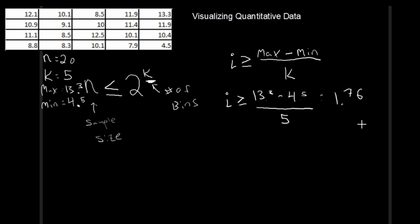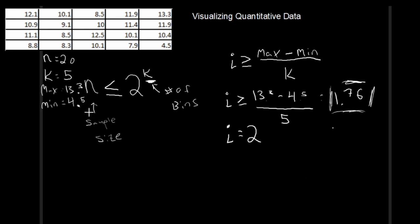So I is greater than or equal to (13.3 − 4.5) / 5, which gives us 1.76. Rarely will we actually use this exact value — counting up in bins of 1.76 would be a nightmare. Since I must be bigger than 1.76, we round up to the next convenient bin width. Counting by twos seems natural, so we use a bin width of two. That gives us five bins each of width two.